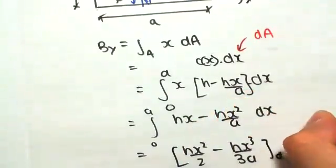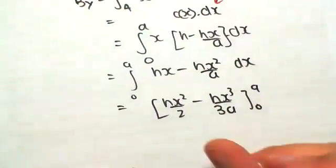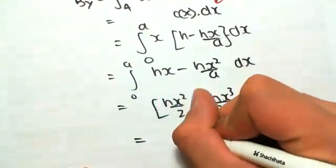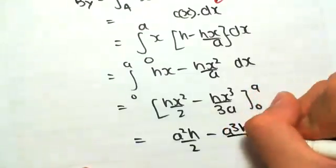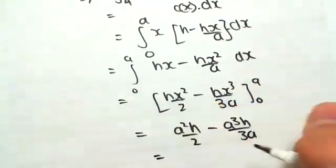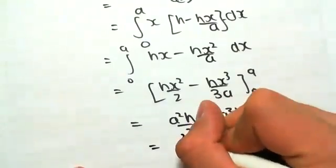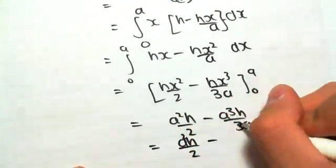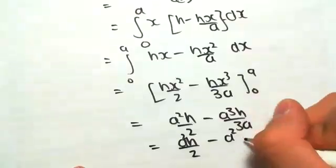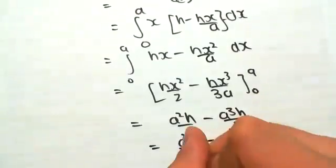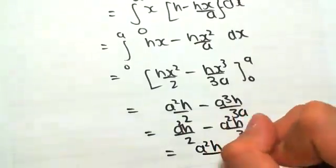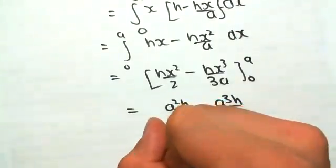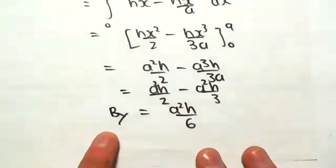between 0 and a. Substituting in for a, we would have a squared h on 2, minus a cubed h on 3a, which simplifies to a squared h on 2, minus that a is going to cancel with that one, so giving us a squared h on 3, which simplifies to a squared h on 6. So there is our first moment of area, By.